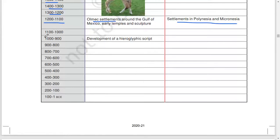1,100 to 1,000, 1,000 to 900: development of hieroglyphic script. 900 to 800, 800 to 700, 700 to 600, 600 to 500, 500 to 300, 300 to 200, 200 to 100, 100 to 1 BCE.